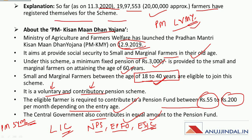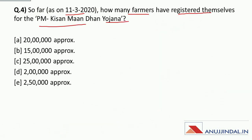As on 11 March 2020, 19,97,553 farmers — approximately 20 lakh — have registered themselves for the scheme. Therefore the correct answer is approximately 20 lakh farmers.